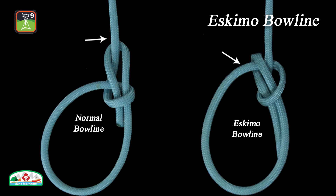The key difference between the common bowline and the Eskimo bowline is the bite. With the standard or common bowline, the bite is formed at the standing part. With the Eskimo bowline, the bite is formed at the eye of the loop.